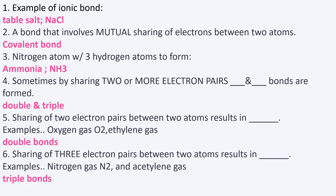Number five: sharing of two electron pairs between two atoms results in double bonds. An example of this is oxygen gas, O2, and ethylene gas.